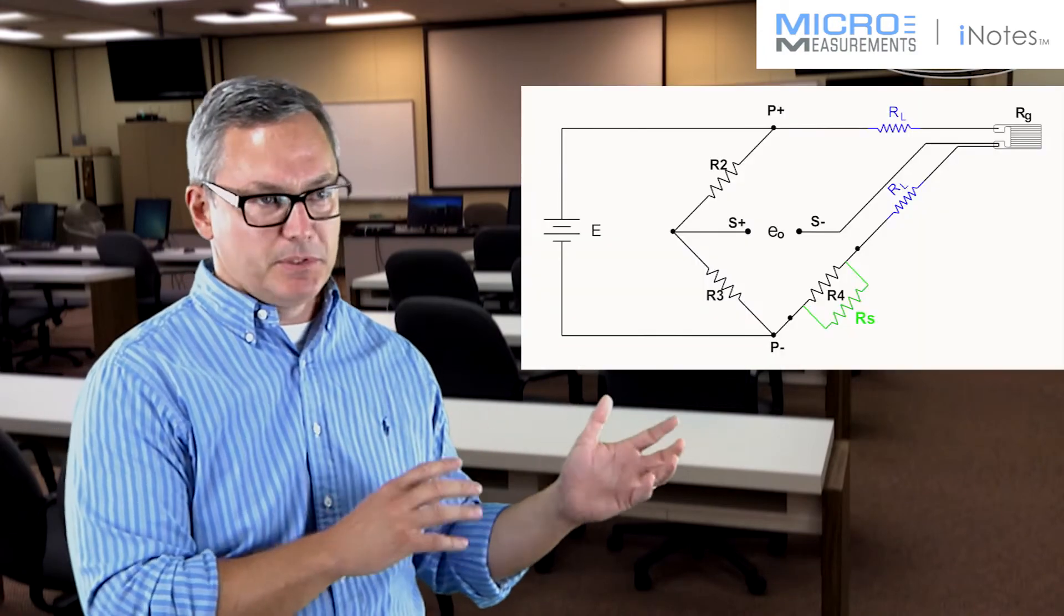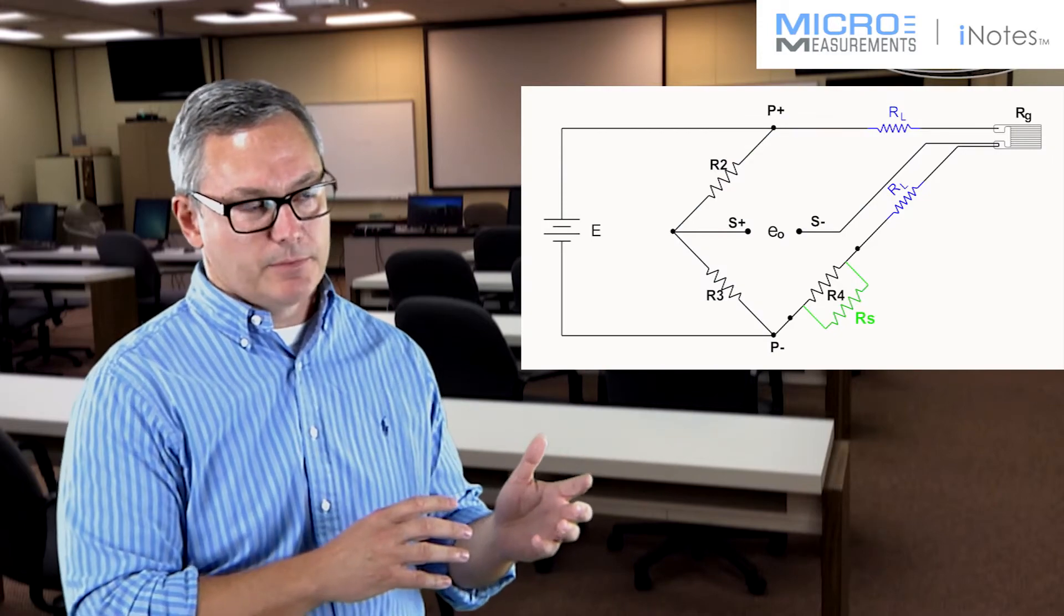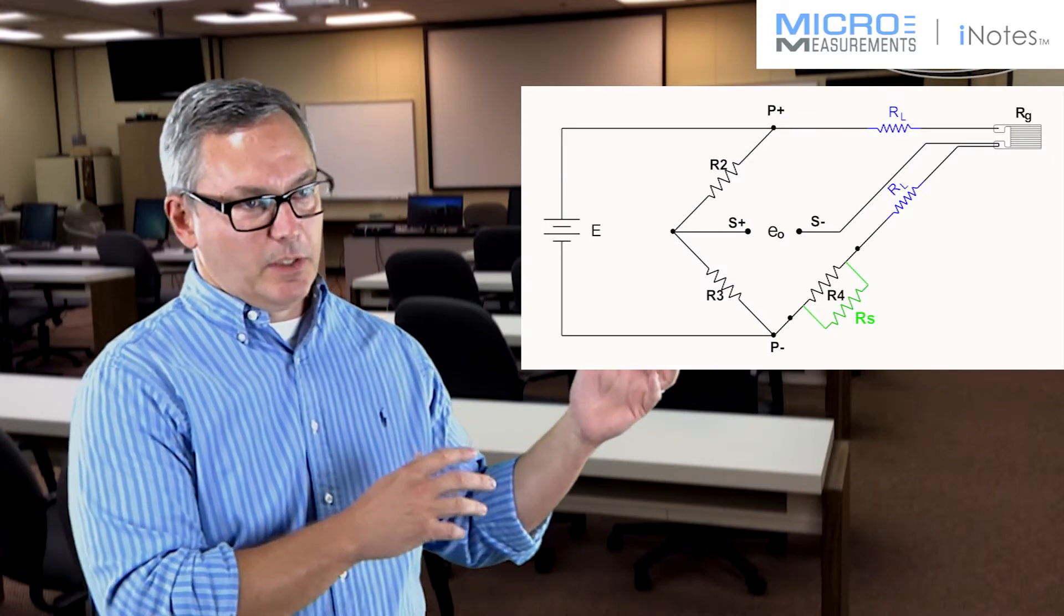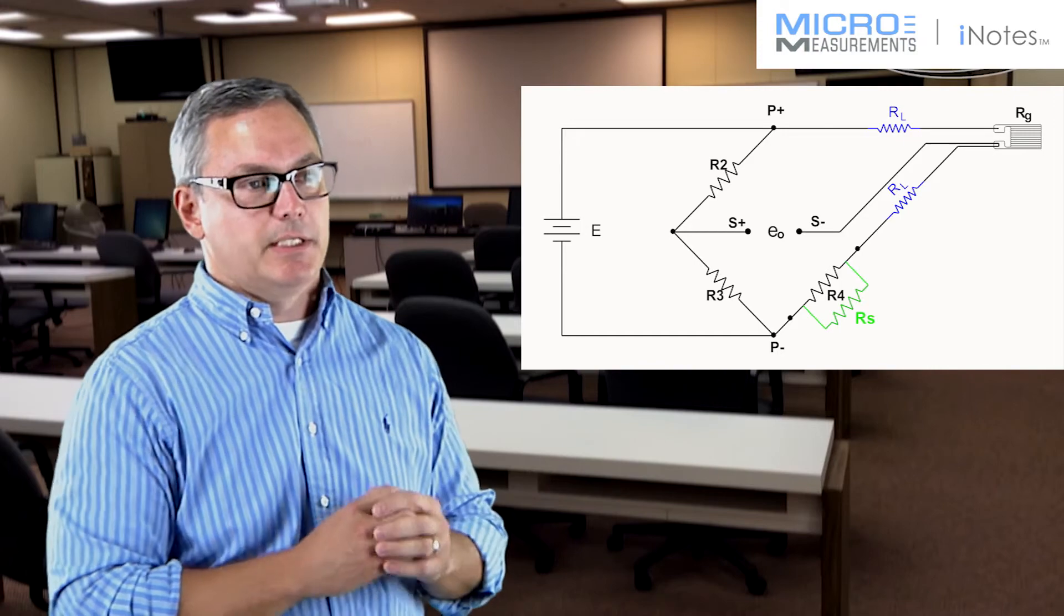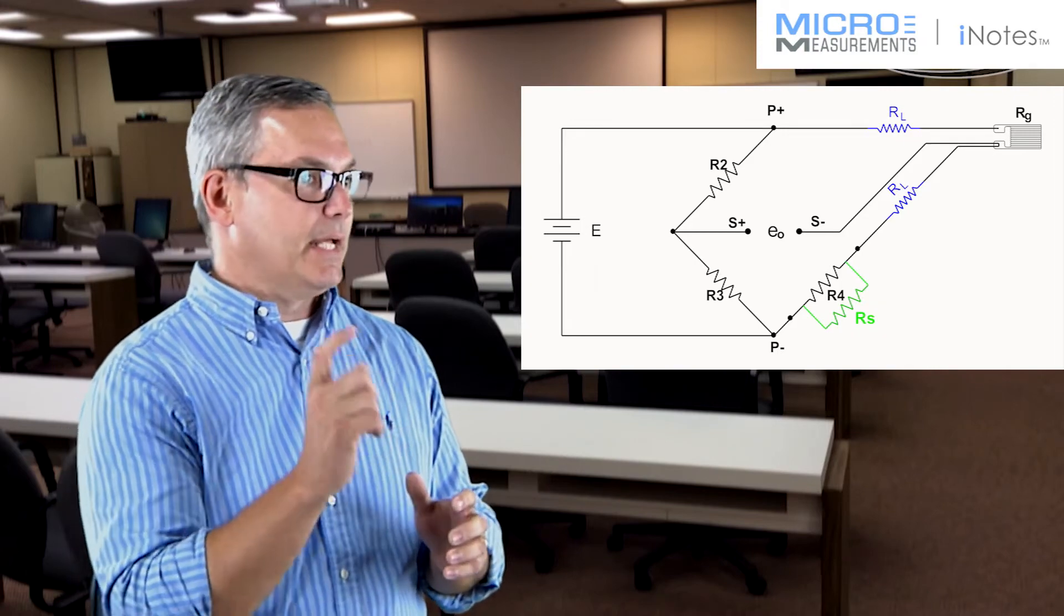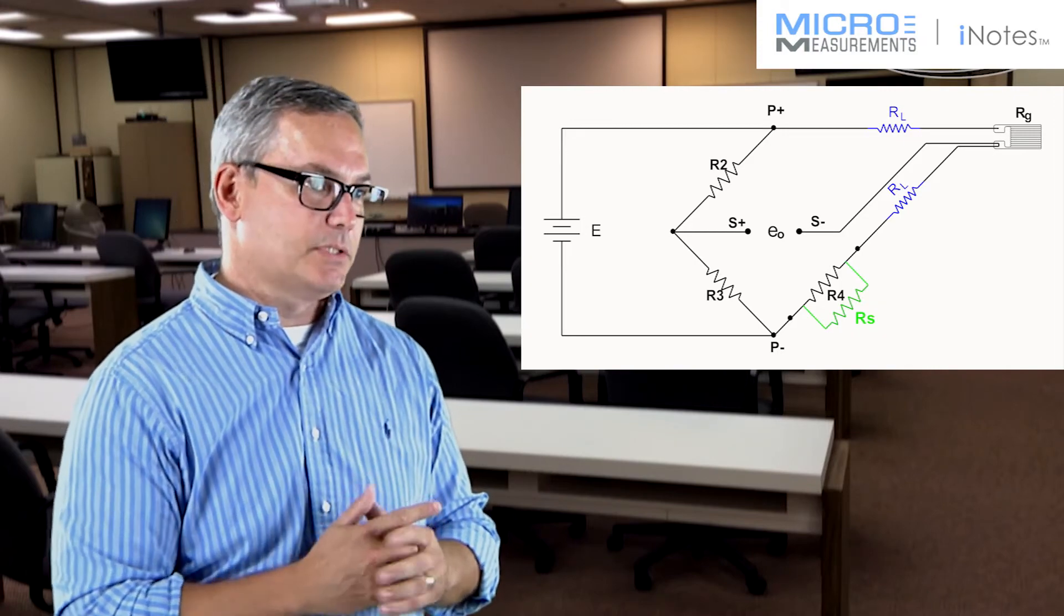Now, with our own instrumentation, specifically our data acquisition, we like to shunt calibrate across what's known as the dummy resistor in the Wheatstone bridge. If you take a look at this sketch, you'll see that this resistor gets connected across the resistor that has to match the input resistance of your strain gauge.